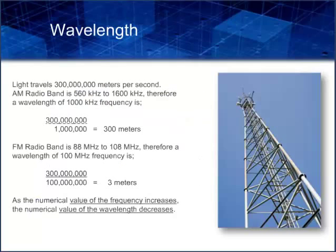Light travels nearly 300 million meters per second and is constant in a vacuum like space. To determine the wavelength, you divide the speed of light by the frequency in hertz. The AM radio band is 560 kilohertz to 1,600 kilohertz. Therefore, a wavelength at 1,000 kilohertz frequency is the speed of light divided by 1,000,000 hertz, which equals 300 meters.